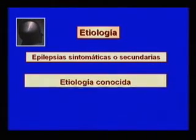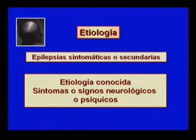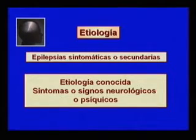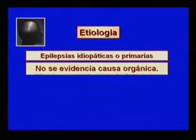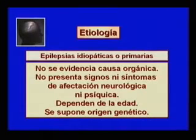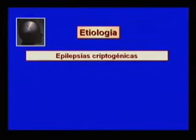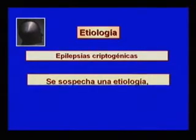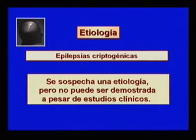De acuerdo con su causa, las epilepsias se clasifican en: Epilepsias sintomáticas o secundarias, que son aquellas que tienen una etiología conocida y en las que suelen encontrarse síntomas o signos neurológicos o psíquicos, pudiendo ser esta etiología remota y ya estática o evolutiva. Epilepsias idiopáticas o primarias, en las que no se evidencia causa orgánica alguna, el paciente no presenta signos ni síntomas de afectación neurológica ni psíquica, son dependientes de la edad y se les supone un origen genético. Epilepsias criptogénicas o probablemente sintomáticas, en las que por sus características clínicas se sospecha una etiología, pero la misma no puede ser demostrada a pesar de los estudios.